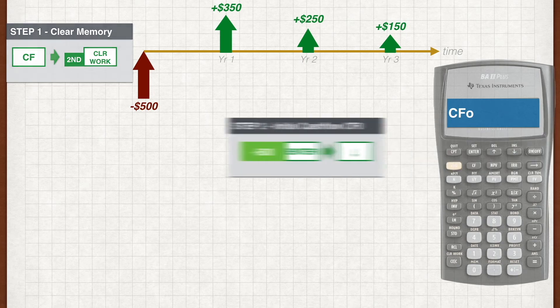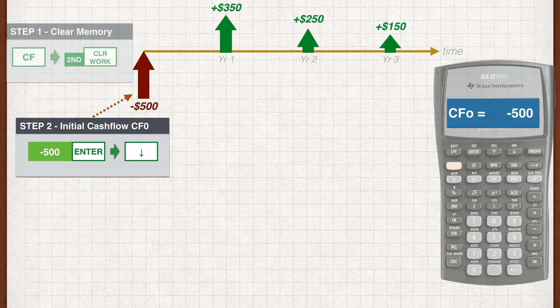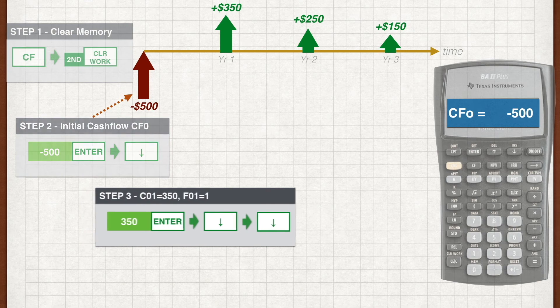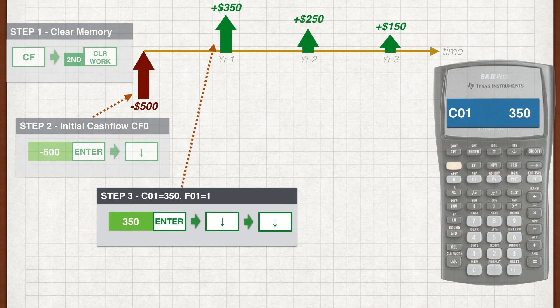Step two is to input the initial cash flow denoted by CF zero. The initial cash flow is the cash flow at year zero. Key in minus 500, press enter to store it, and press the down arrow key to move on to the next cash flow. Now you see CO1 on the calculator, which means it's waiting for your input for the cash flow at the next time period. We see that there is a $350 cash flow at year one, so we key in 350, press enter, and press the down arrow to move on.